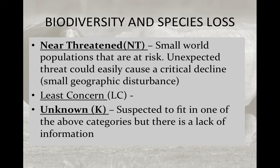Near-threatened populations are doing well for now but must be left alone in terms of geographic disturbance — we can't put a shopping mall in one of their habitats. Species of least concern are in high abundance. Lastly, some species are classified as unknown, and unfortunately a high percentage of our species fall into this category, meaning we just don't have enough information on their population levels, habitat, or food source to place them in any of the above categories.